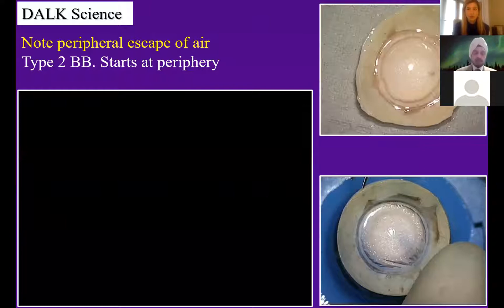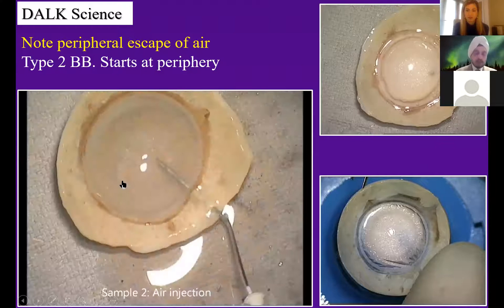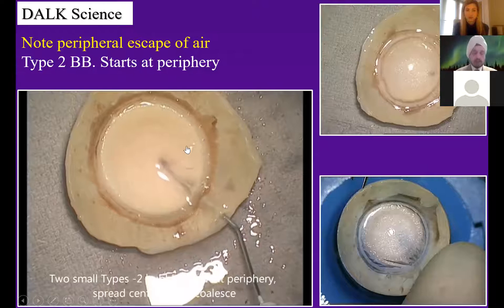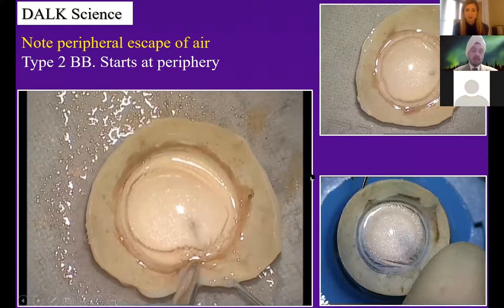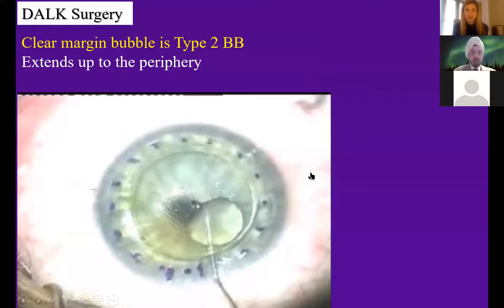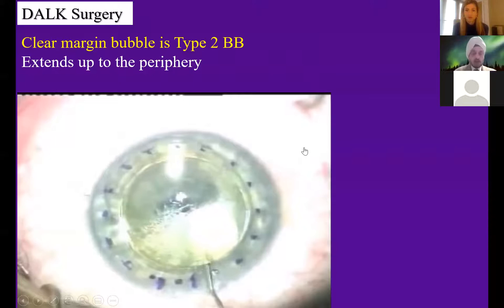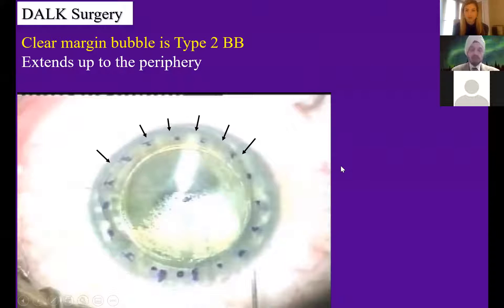Sometimes this happens: when air is injected, notice the bubble starts at the periphery. It's a much thinner wall bubble — you can tell just by looking — and it goes across the entire surface of the cornea. Another one starts at the periphery and the two of them merge to form this large thin-wall bubble, which we call the type 2 bubble. This is air lifting up the Descemet's membrane only — not the pre-Descemet's layer. In the human eye, you will see air going all the way to the periphery with no white ring, just a clear margin going way beyond the trephine cut. That was also called in the past the explosive bubble or clear margin bubble, but it is really a type 2 bubble.